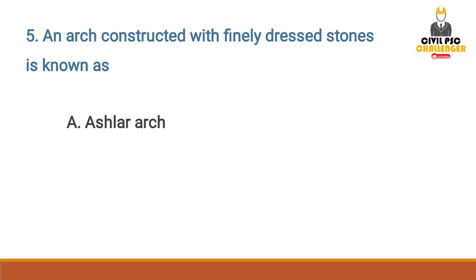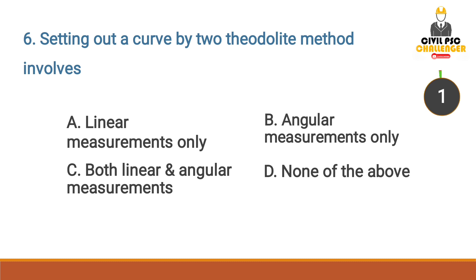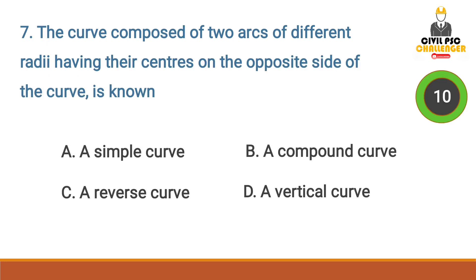An arch constructed with finely dressed stones is known as Ashlar Arch. Answer option A: Ashlar Arch. Setting out a curve by the two theodolite method involves — Answer option B: Angular measurements only. Setting out a curve by two theodolite method involves angular measurements only.